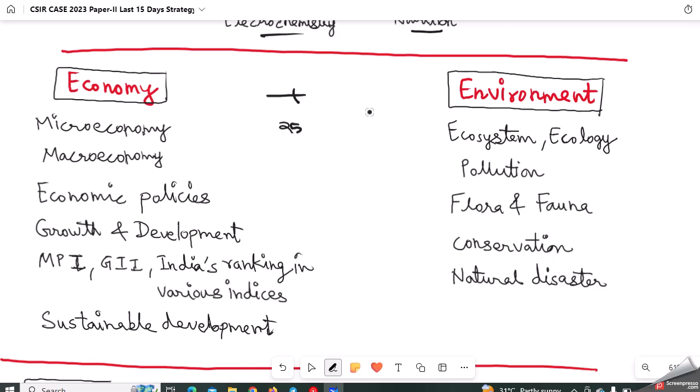As far as economy and environment is considered, remember both will have a total of 25 questions. In economy, just go through Mrunal's lectures, learn about microeconomy, macroeconomy, economic policies of the government - that LPG reforms - then growth and development. This chapter can be read from Ramesh Singh book. What is MPI, GDI, India's ranking in various indices? Simply if you Google, you will get all these details. Then read about sustainable development - here Sustainable Development Goals, Millennium Development Goals, these topics are to be covered.